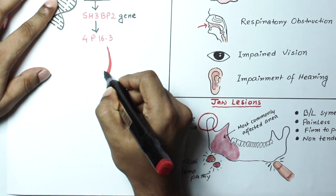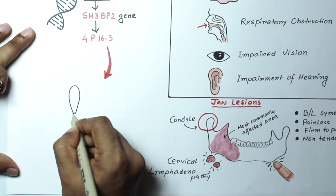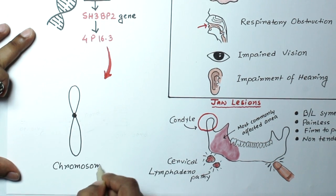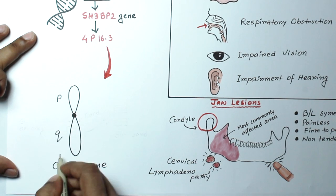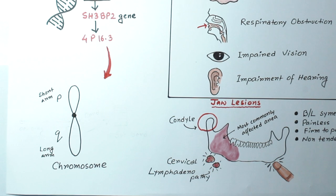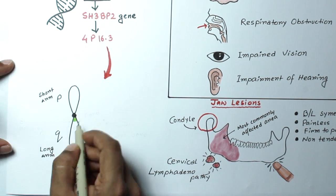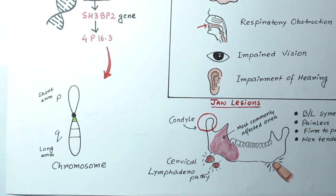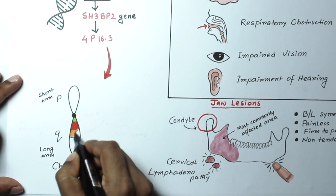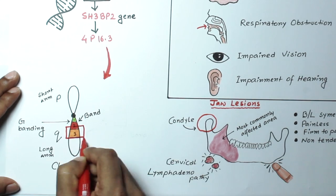Do you know what 4p16.3 means? Okay, let's discuss a little about gene mapping. Here is the functional unit of chromosome, also called chromatid. It has two arms: the short arm, also known as p arm, and the long arm, known as q arm. After G-banding staining, some separate areas are visible under the electron microscope. They are called bands. Numbering starts just adjacent to the centromere. Here I have shown three bands.